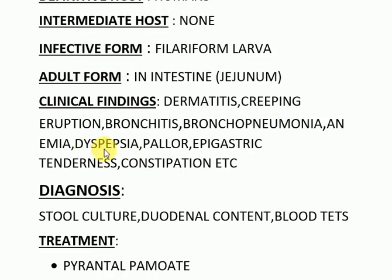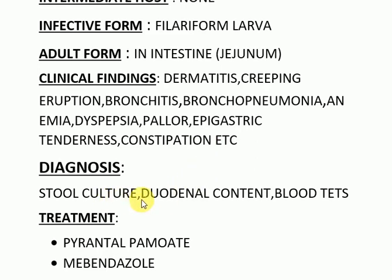Diagnosis is made through stool culture or duodenal content examination. Blood tests are also done — RBC count, shape and size of RBCs, hemoglobin, and WBC count — because hookworm actually causes microcytic hypochromic type of anemia due to blood loss.